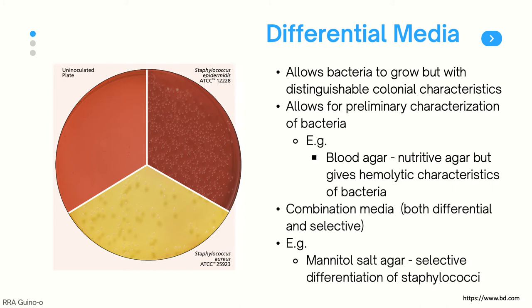Next we have differential media. This kind of media allows bacteria to grow with distinguishable colonial characteristics, and this allows us to have a preliminary characterization of our bacteria. One example, which we saw earlier, was blood agar. Blood agar is a nutritive agar that allows all types of organisms to grow, but since it contains blood, it allows us to view the hemolytic characteristics of bacteria, which can be used to partially identify them.